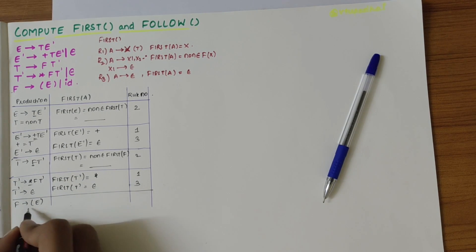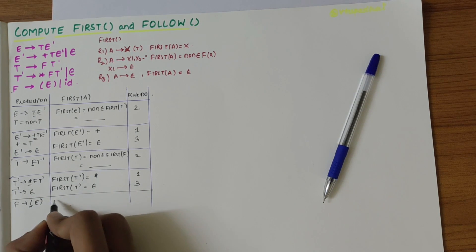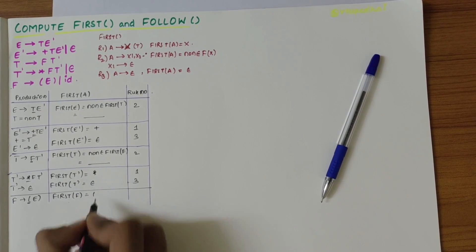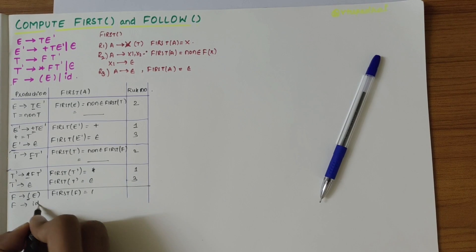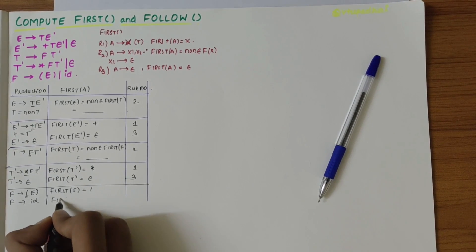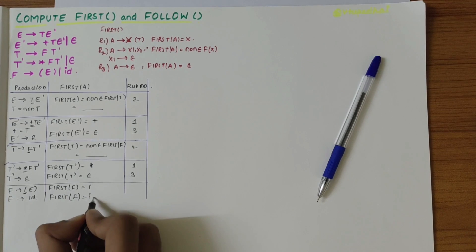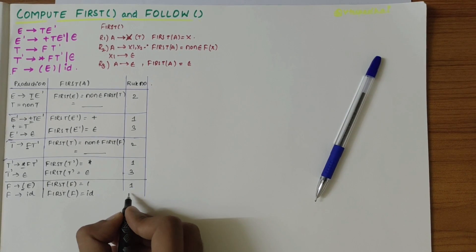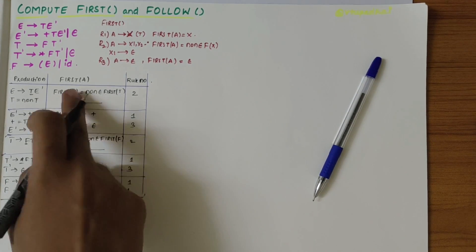For the last production, F derives open parenthesis E — the leftmost symbol is '(' which is a terminal, so first of F includes '('. Also F derives id, and id is a terminal, so first of F also includes 'id'. This uses rule one, rule one, and rule one.